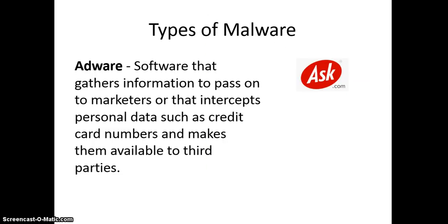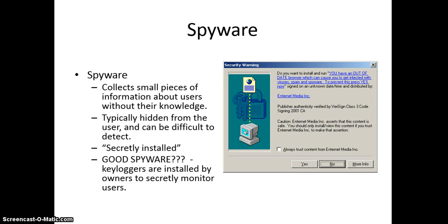You've probably seen adware out on the market when browsing — things where information gets passed to marketers. Google advertises specifically based on emails you've sent; Yahoo does it, Ask.com toolbar, Facebook — a whole bunch of adware. If this gets installed on your machine, oftentimes there's a little program running in the background recording something and sending it to a particular marketer. Spyware is very similar, except it is secretly installed. Things like keyloggers may be hidden from you, and they collect small pieces of information without your knowledge and send it off to a particular person interested in that information.